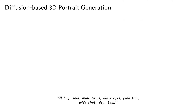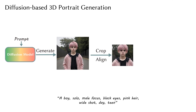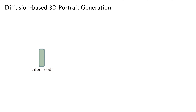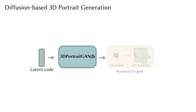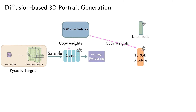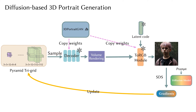Now we introduce our 3D Portrait Generation Pipeline. Given a prompt describing a particular portrait, we first generate a random portrait image using the diffusion model. We then crop the portrait image to produce an aligned image. Subsequently, we obtain the inversion latent code of the aligned image through latent code optimization. The resulting latent code is used to synthesize the corresponding Pyramid TriGrid, which serves as the starting point of the subsequent diffusion-based generation process. We keep the parameters of the neural renderer unchanged and employ score distillation sampling to distill the knowledge of the diffusion model into the Pyramid TriGrid.